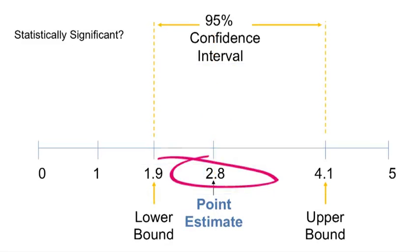Here's a quick example to test your understanding. Is the risk ratio estimate of 2.8 with a 95% confidence interval of 1.9 to 4.1 statistically significant? The answer is yes. This risk ratio estimate is statistically significant because the 95% confidence interval of 1.9 to 4.1 does not include the null value of 1.0. This concludes the segment on confidence intervals.